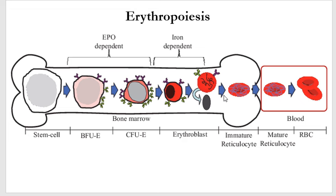The entry of the reticulocyte into the blood system is through diapedesis. This is simply going in between the vascular cells. And once it goes into the capillaries, that is where we have a mature erythrocyte — a red blood cell — being seen.